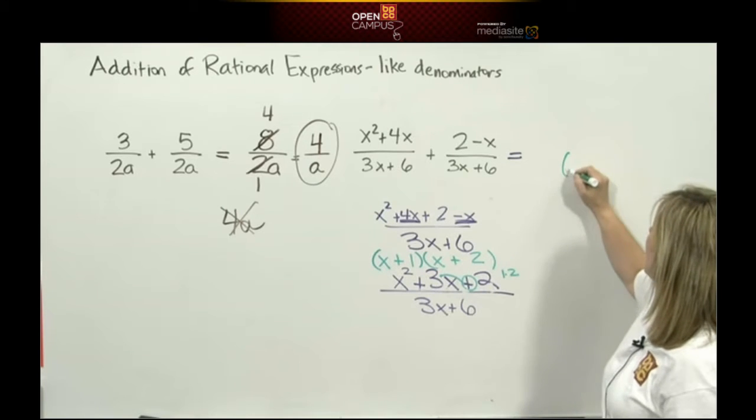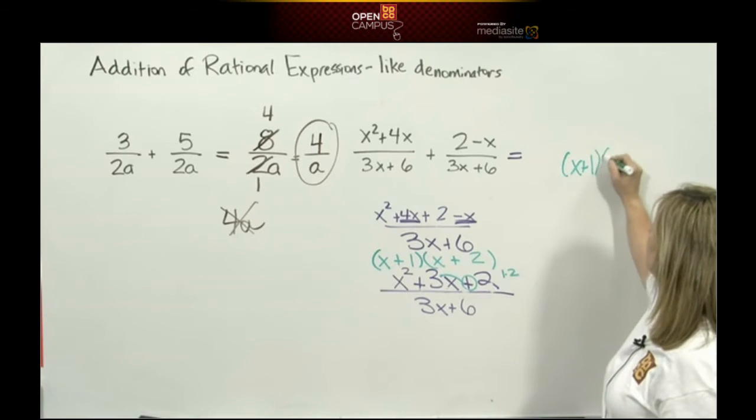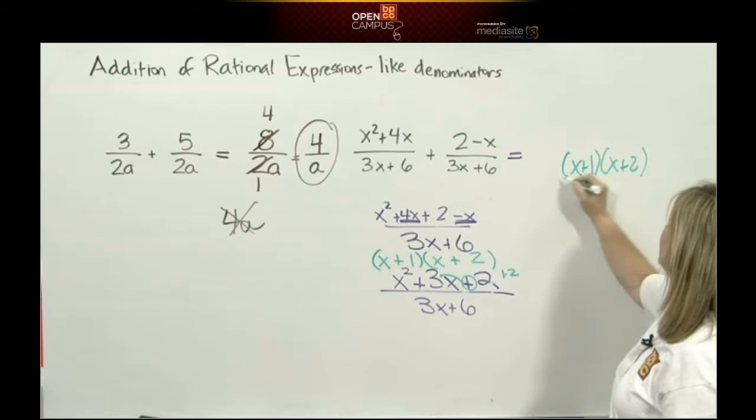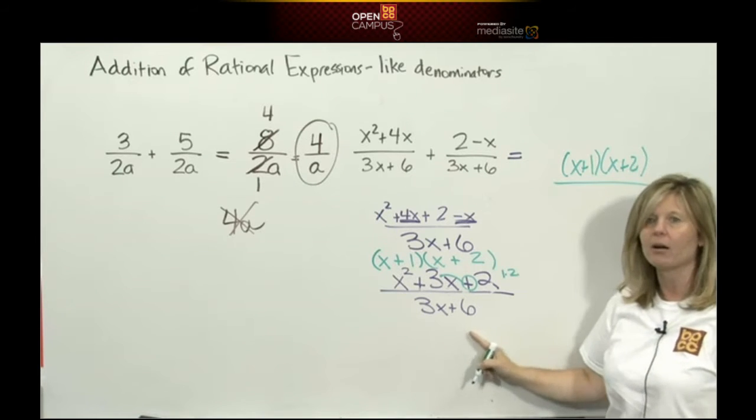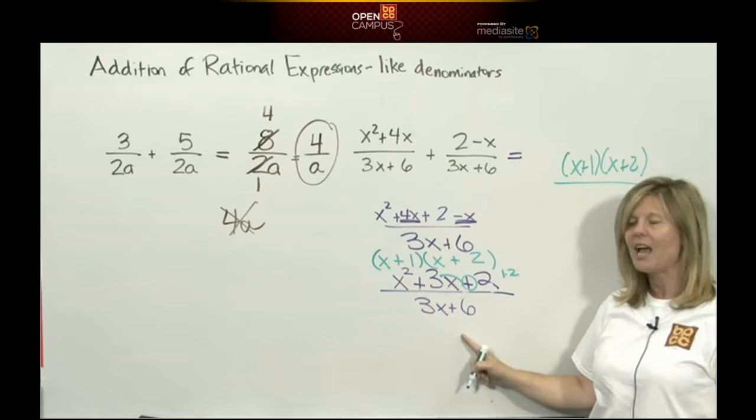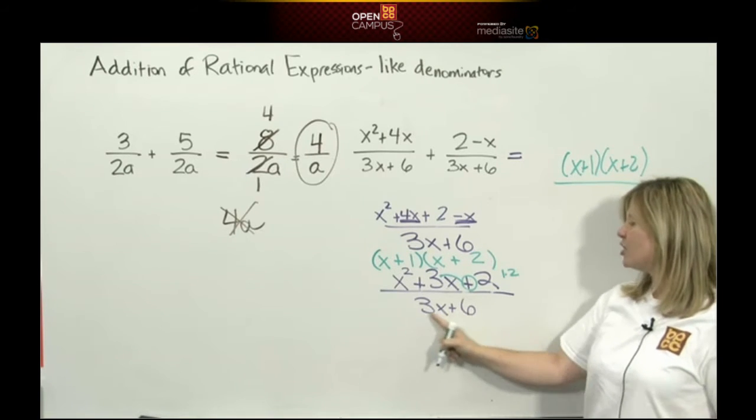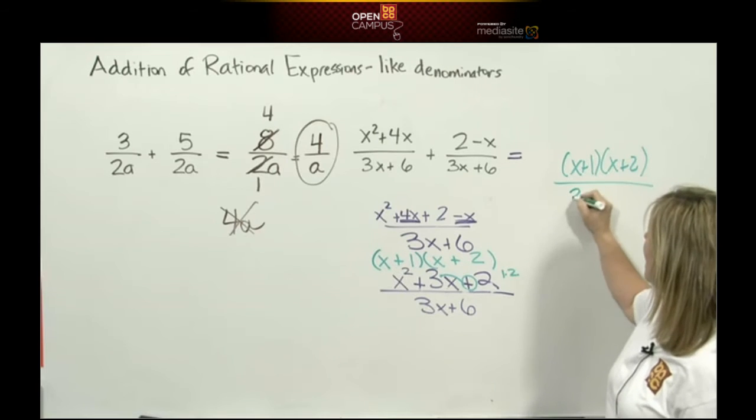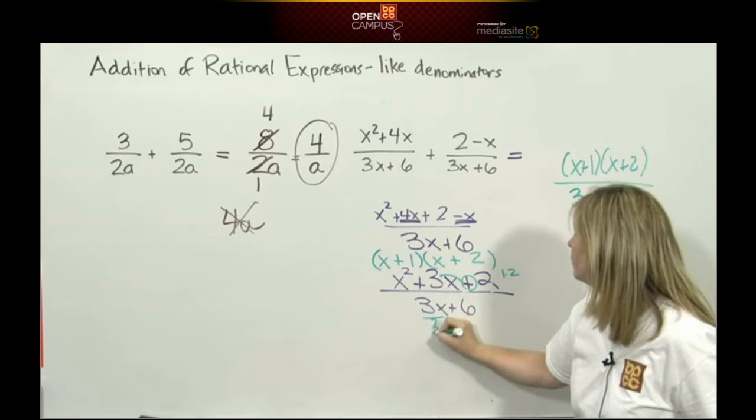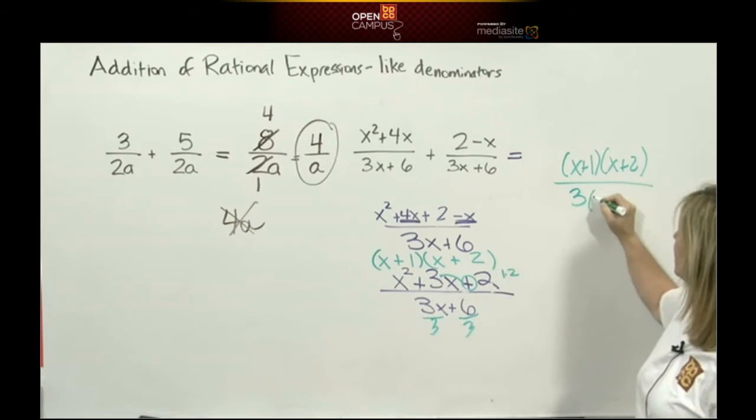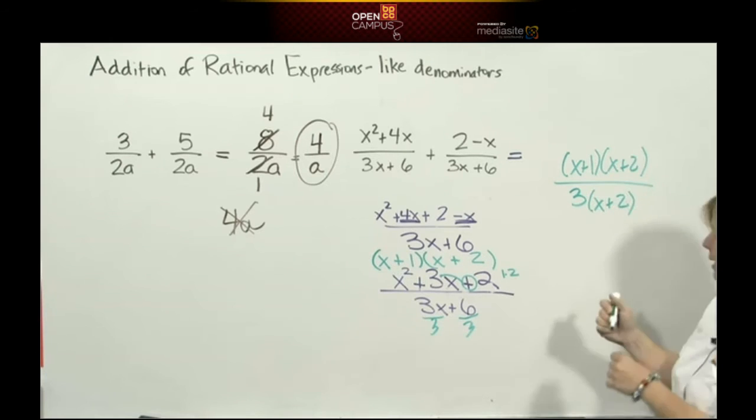Now let's go to our denominator. Again, there's addition; this is not multiplication, so I need to factor. I have 3x plus 6. Well, I have a GCF here, a 3, so I'm going to take out a 3, and that's going to leave me with x plus 2.